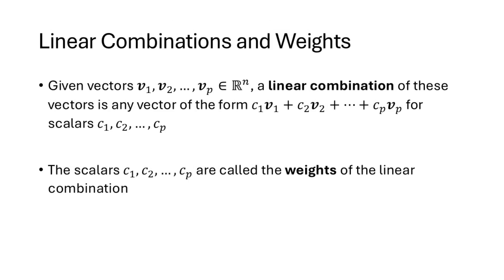Now into the definition. If we have vectors v1, v2, all the way up through vp in R^n — meaning the v's are vectors with n entries, and there are p of them — a linear combination of those vectors is any vector of the form c1 times v1 plus c2 times v2 plus ... plus cp times vp, for some scalars c1 through cp. The c's are scalars, the v's are vectors, and we form the scalar multiple of each scalar multiplied by the corresponding vector, then add up the results. The scalars are called the weights in the linear combination.